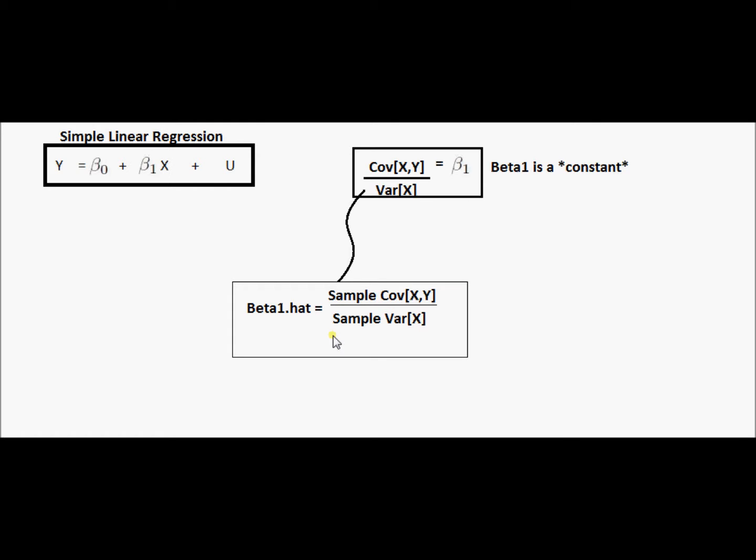Given a sample, I can compute it, but don't let that fool you. We don't think of beta one hat as a constant like we think of beta one as a constant. Beta one is the true value of the slope coefficient in the regression relationship. Beta one hat is our estimator of that true value. And we may estimate it really well given some samples. We may estimate it really poorly given other samples.